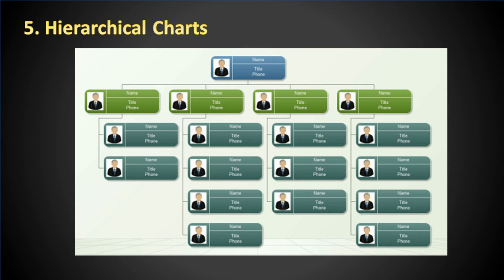Organizational charts, or hierarchy charts, are the graphical representation of an organization's structure. Their purpose is to illustrate the reporting relationships and chains of command within the organization.